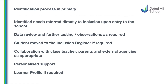When we have the information, we will take time to observe the child, to see how they are managing within their setting, get feedback from their class teacher, and then we will decide if we need to do further observations or testing to build their pupil profile. Once we have gathered the information, we can put the child's name on our inclusion register, and from there we will be working with the class teacher, the parents and the child themselves to build their support plan.